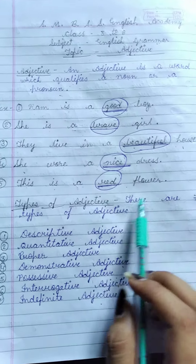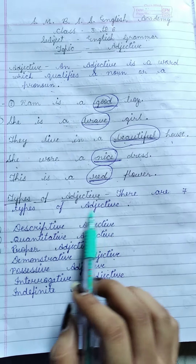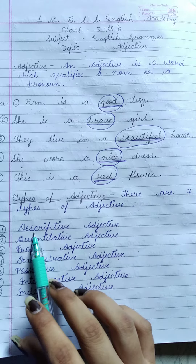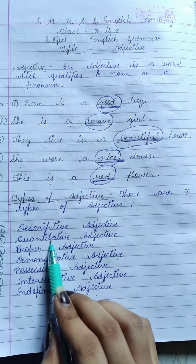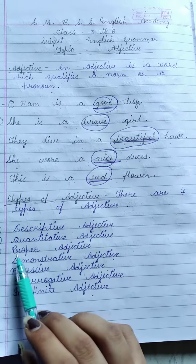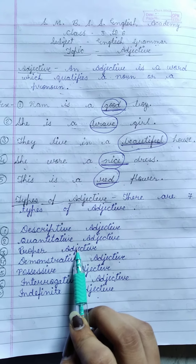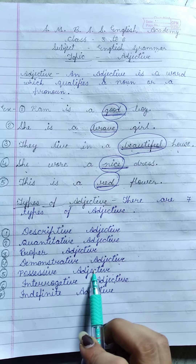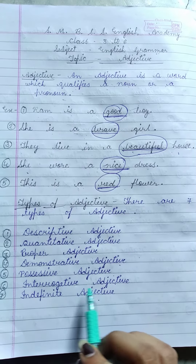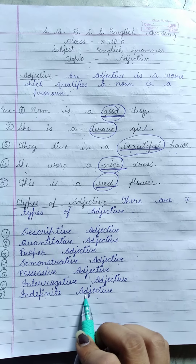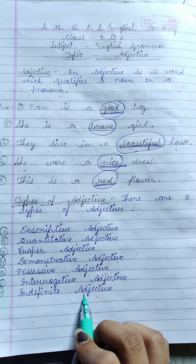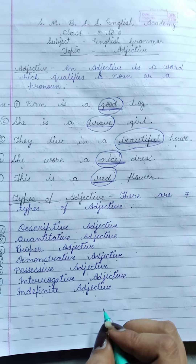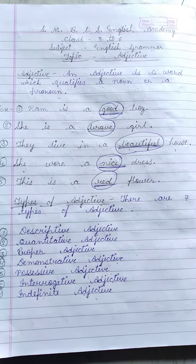Now, types of adjective. There are seven types of adjective. First, descriptive adjective. Second, quantitative adjective. Third, proper adjective. Fourth, demonstrative adjective. Fifth, possessive adjective. Sixth, interrogative adjective. And last, indefinite adjective. These are the types of adjectives, and I will explain about the types of adjectives in detail in my next video.